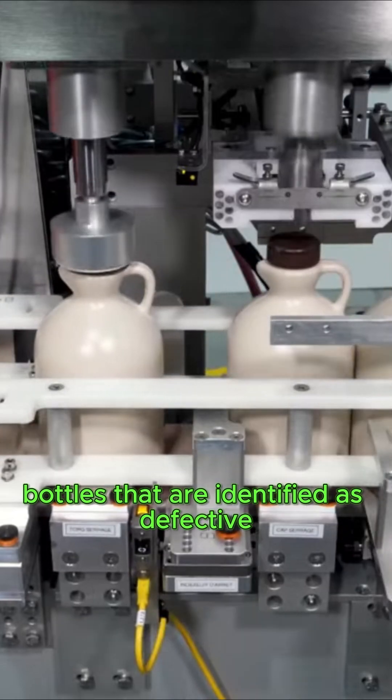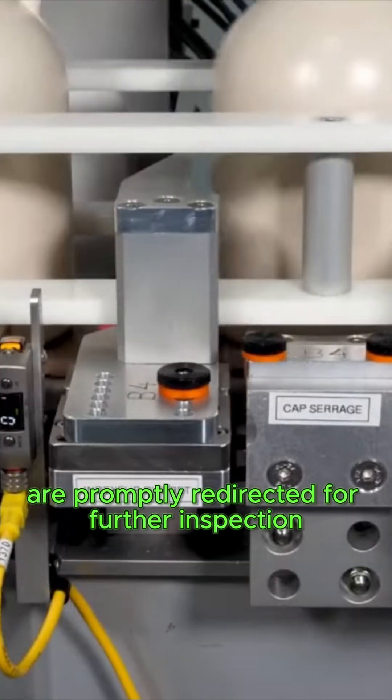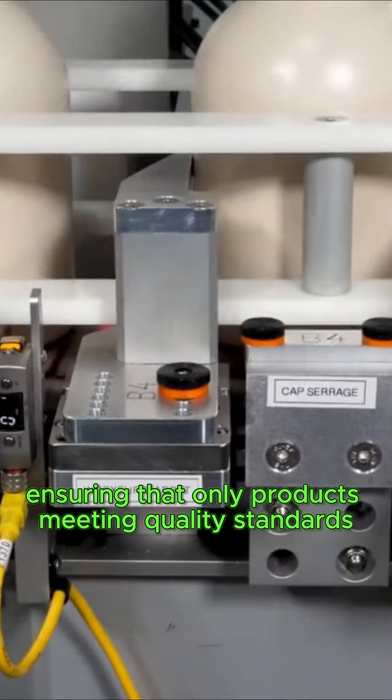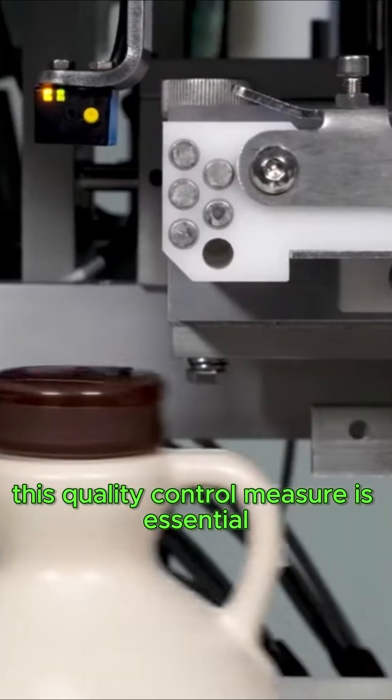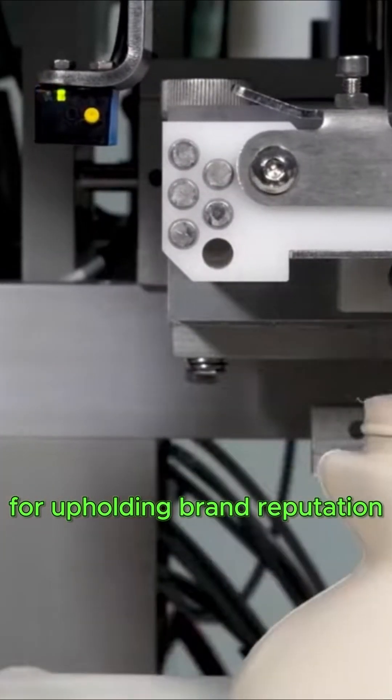Bottles that are identified as defective are promptly redirected for further inspection, thereby ensuring that only products meeting quality standards reach the consumers. This quality control measure is essential for upholding brand reputation.